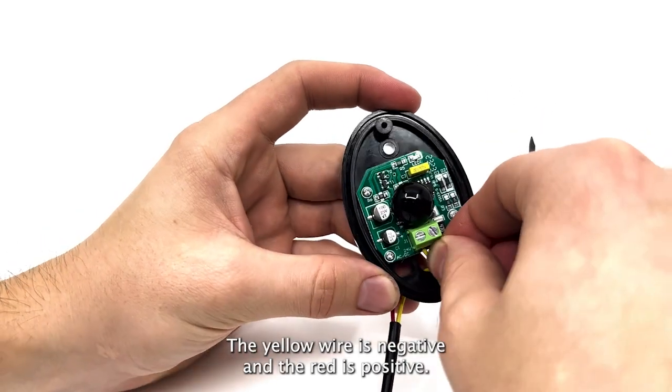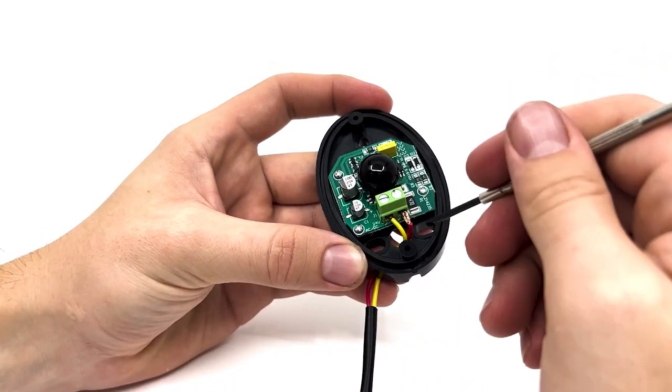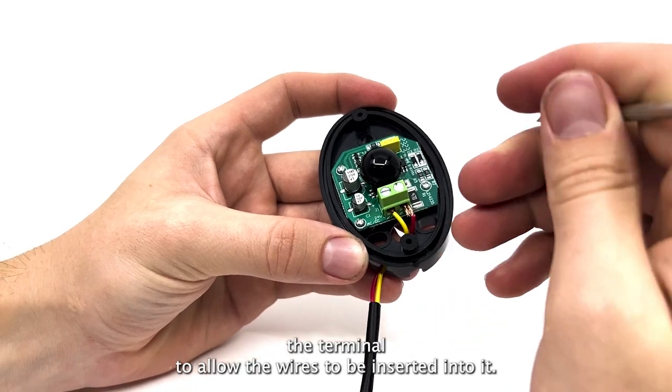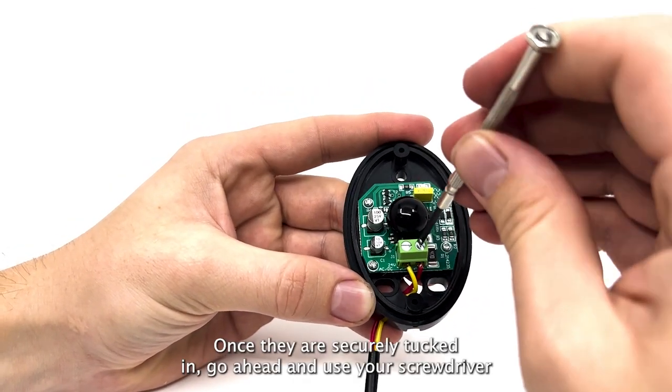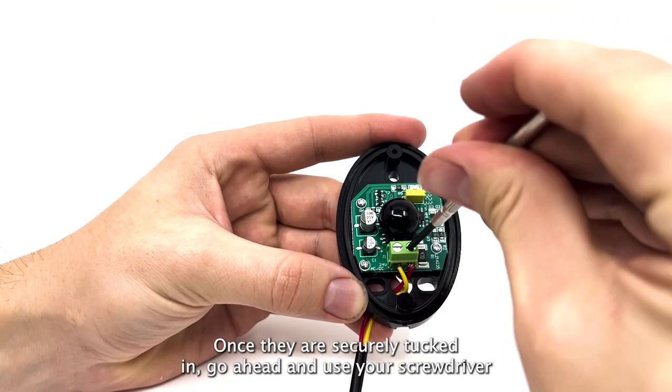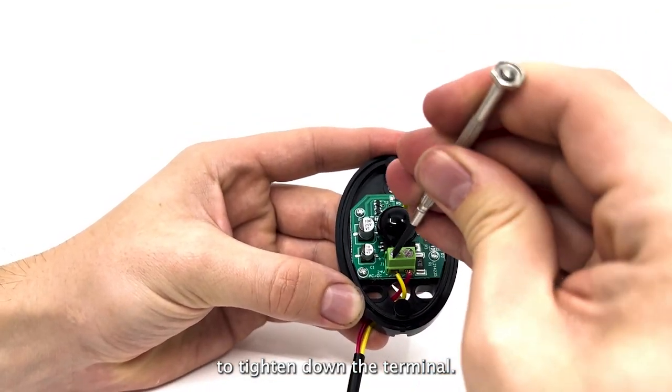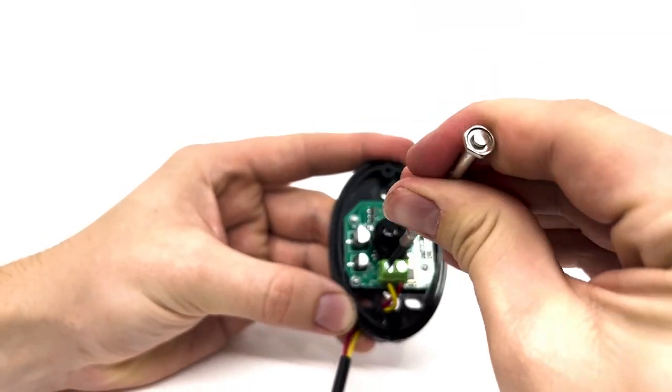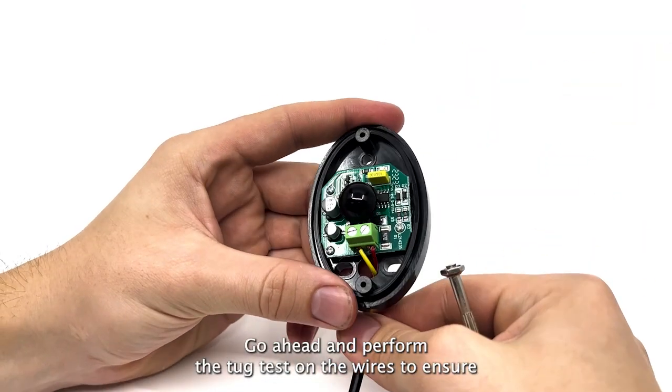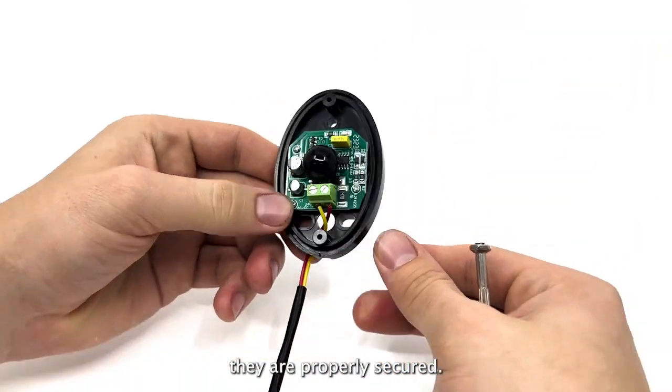The yellow wire is negative and the red is positive. Make sure you loosen up the terminal to allow the wires to be inserted into it. Once they are securely tucked in, use your screwdriver to tighten down the terminal. Perform the tug test on the wires to ensure they are properly secured.